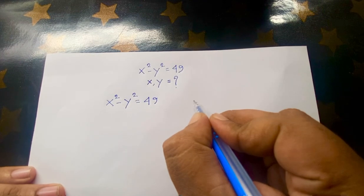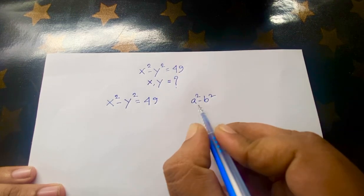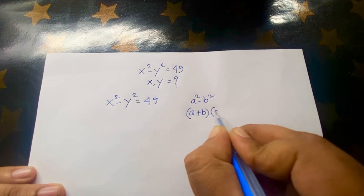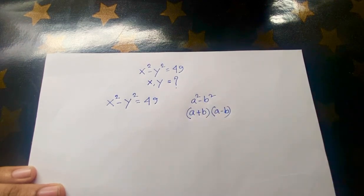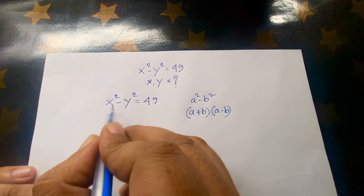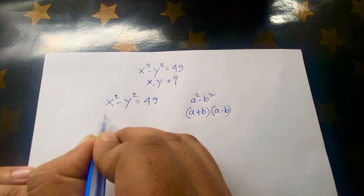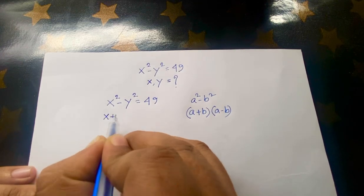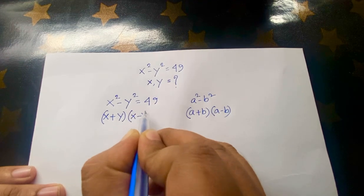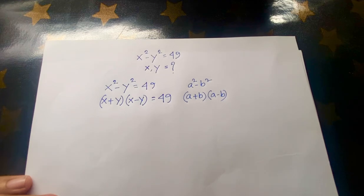To solve this, we know that a squared minus b squared equals (a + b)(a - b). Applying this rule, the equation becomes (x + y)(x - y) = 49.